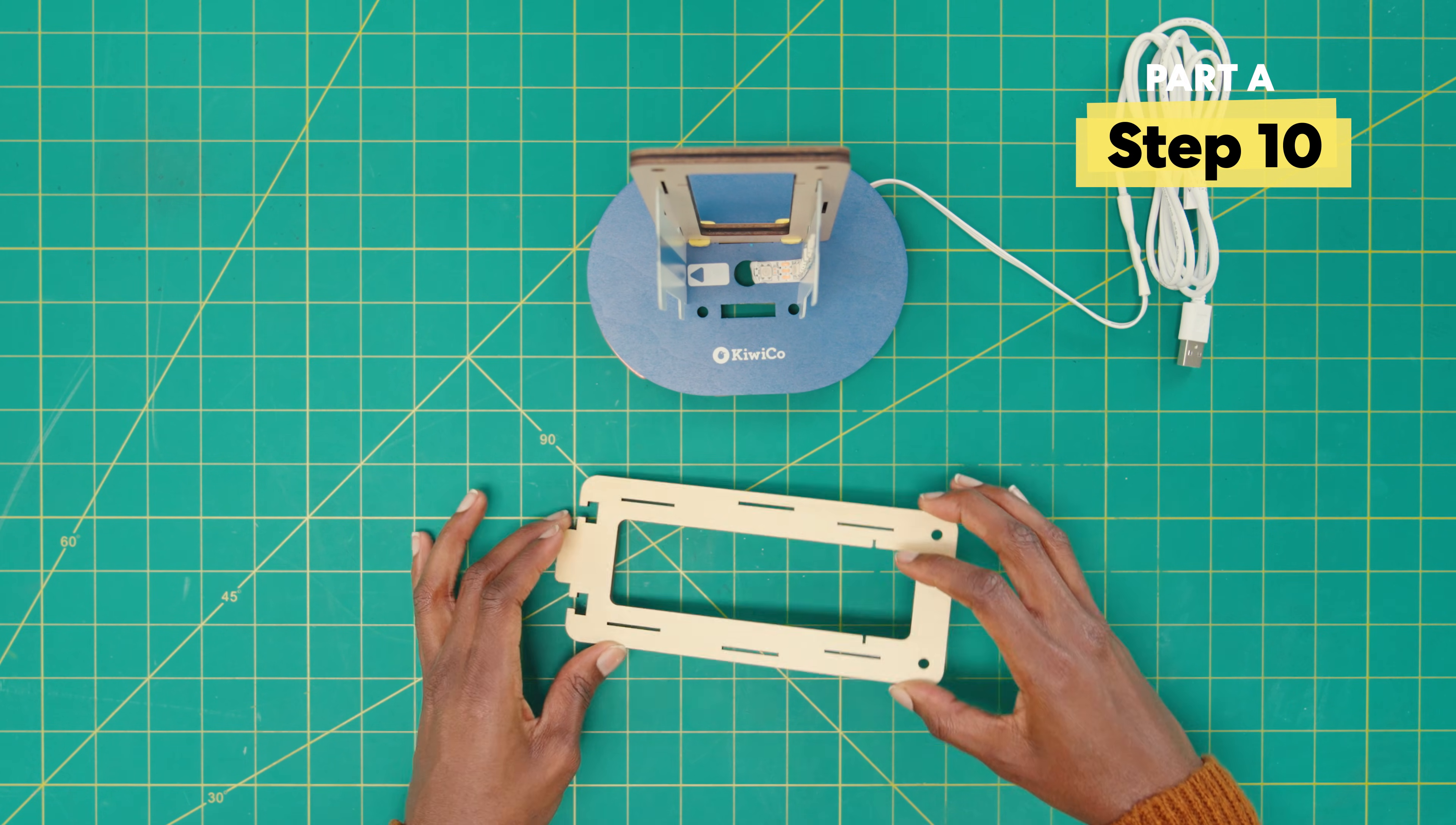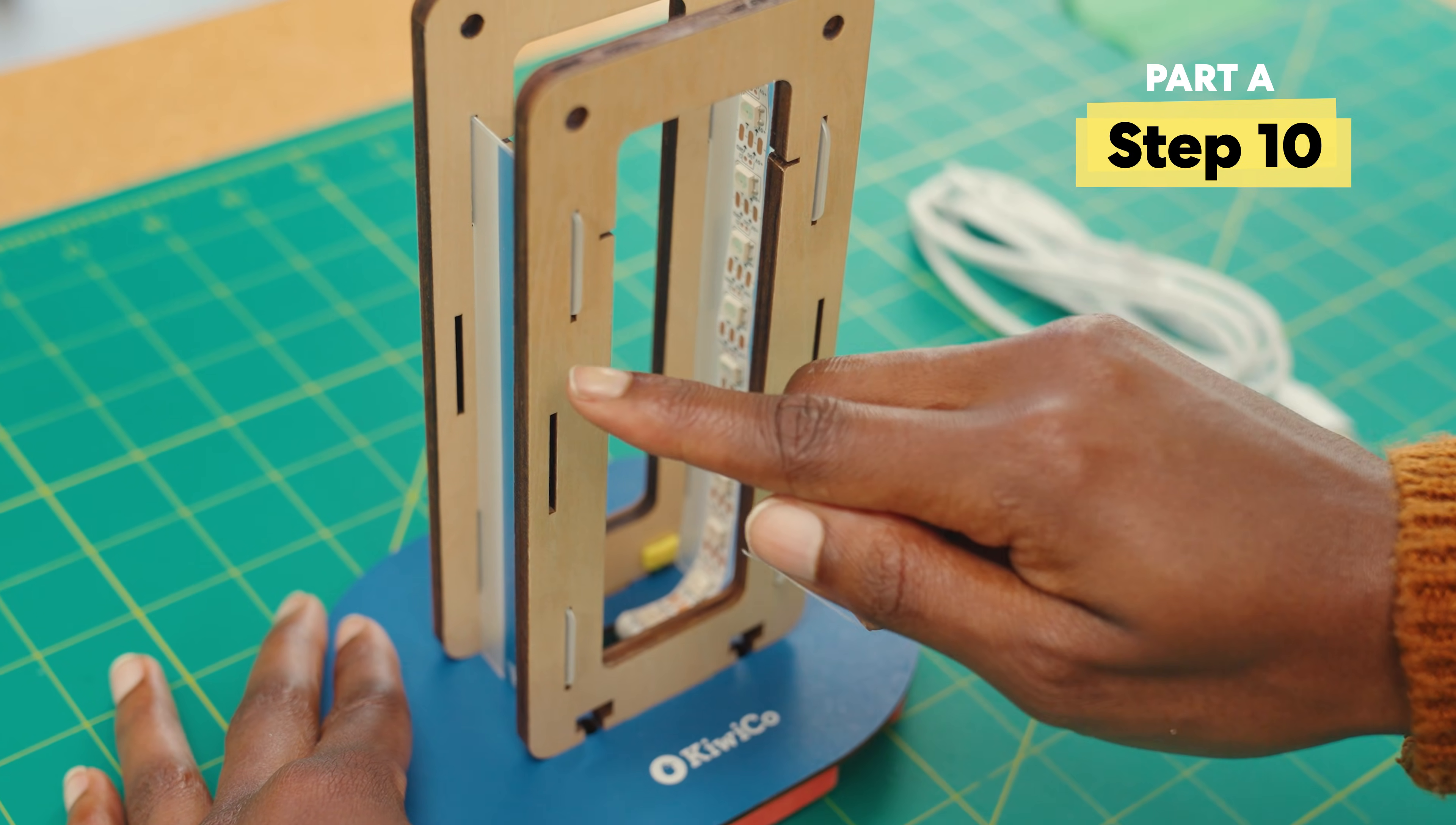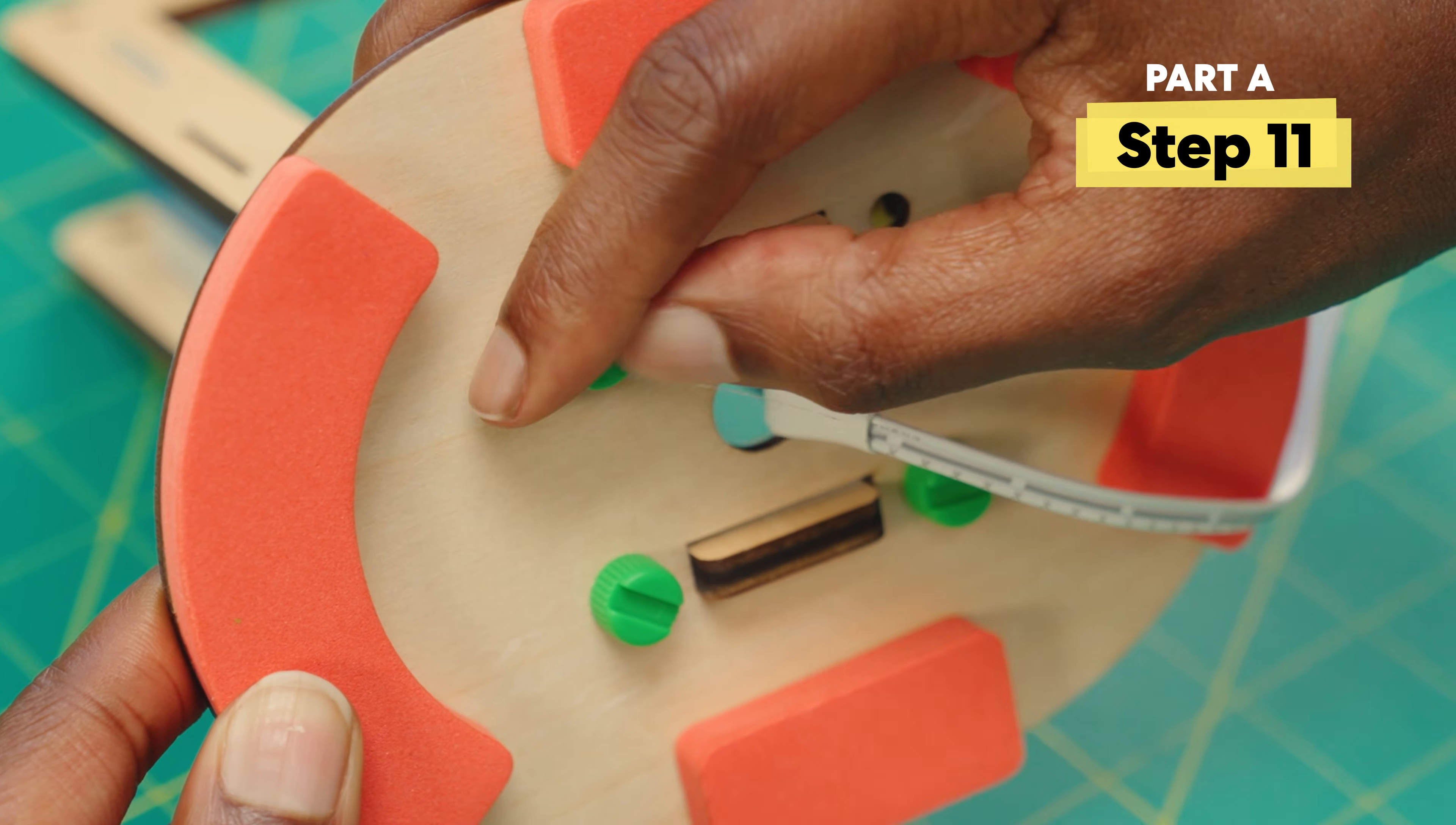Next, add the frame piece to the other side. And now, add T-clips here and here. And then, bolt to hold the frame piece in place.